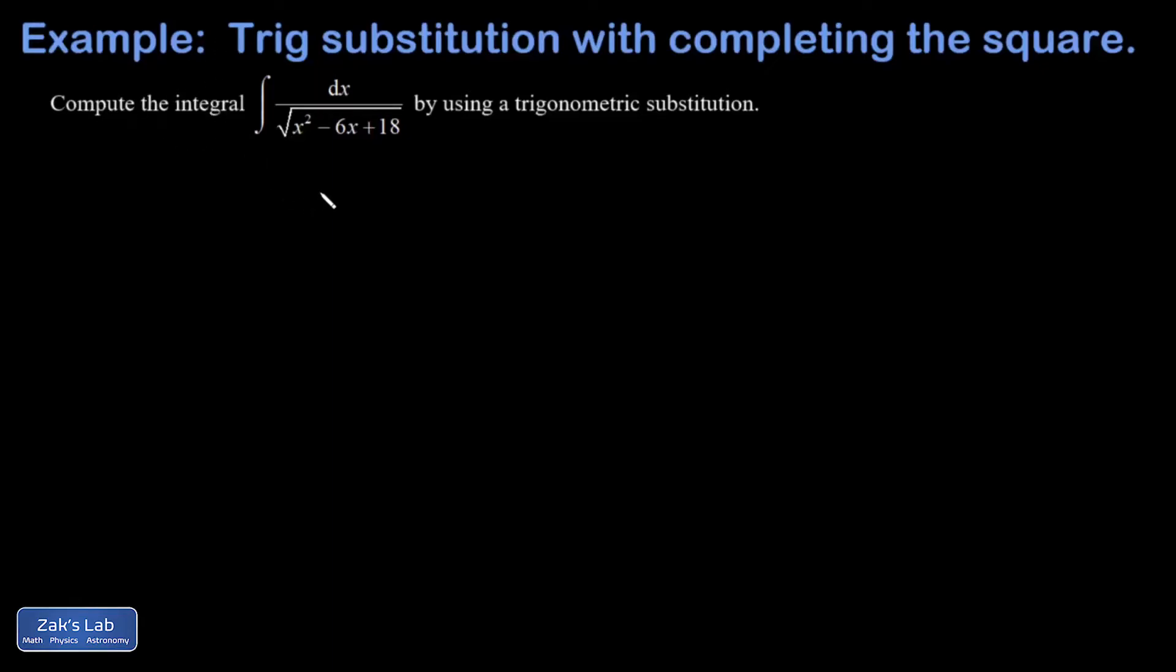We're trying to do this integral by using a trigonometric substitution. A key point here is that to simplify inside this square root, I need to have a variable thing squared plus a constant. Unfortunately, I have this linear term messing with me, and that's why completing the square becomes necessary. Let's see if we can quickly complete the square on this thing.